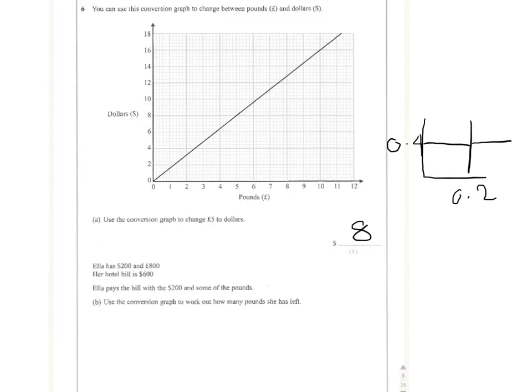Now the second part is quite a bit more difficult. Ella has two hundred dollars and eight hundred pounds. Her hotel bill is six hundred dollars. She pays the bill with two hundred dollars and some of the pounds. Use the conversion graph to work out how many pounds she has left.